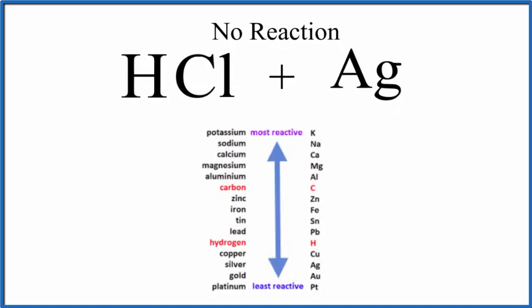The activity series is helpful in determining whether a single displacement reaction will actually happen by looking up the metal, or in this case, the hydrogen, on the chart.